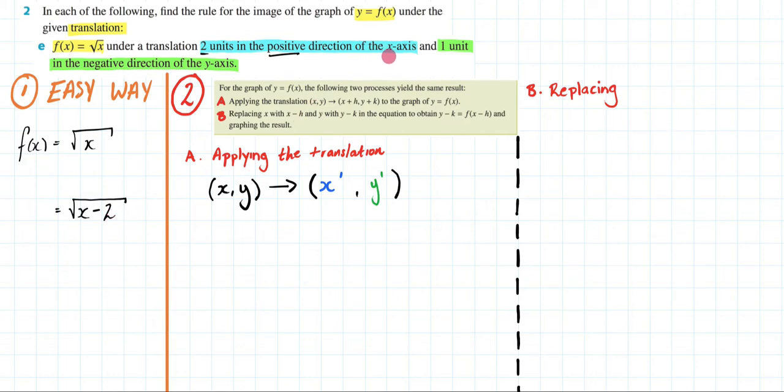So again when applying a translation in the x direction for a square root graph it's going to occur inside the square root and the sign will be reversed. Now let me add something to this.